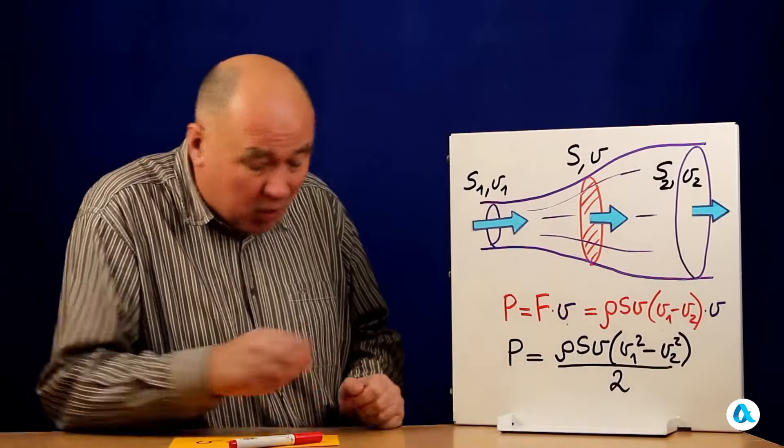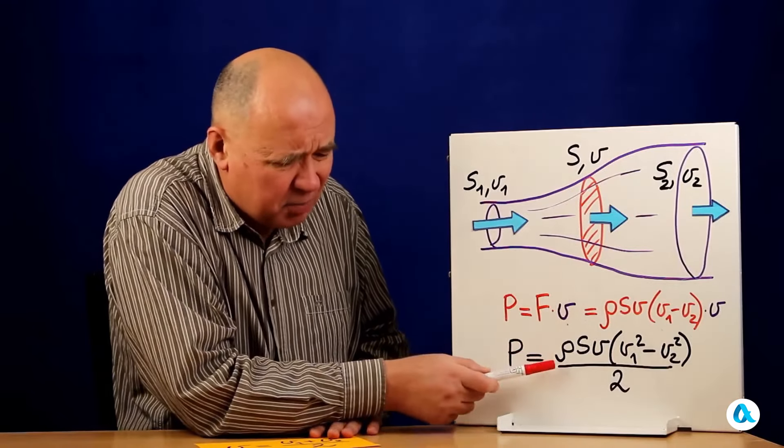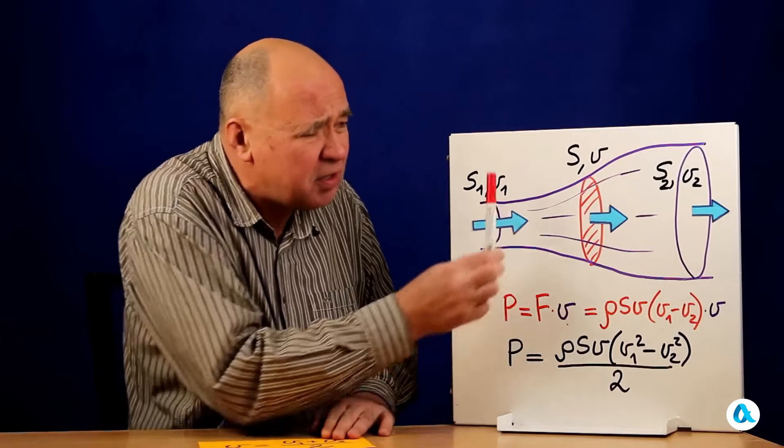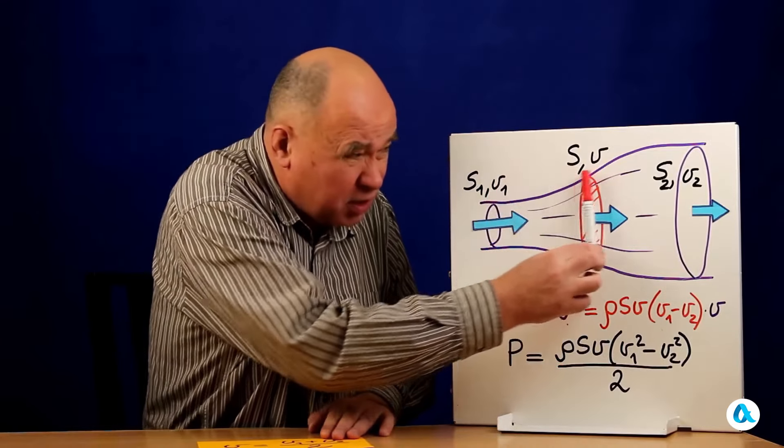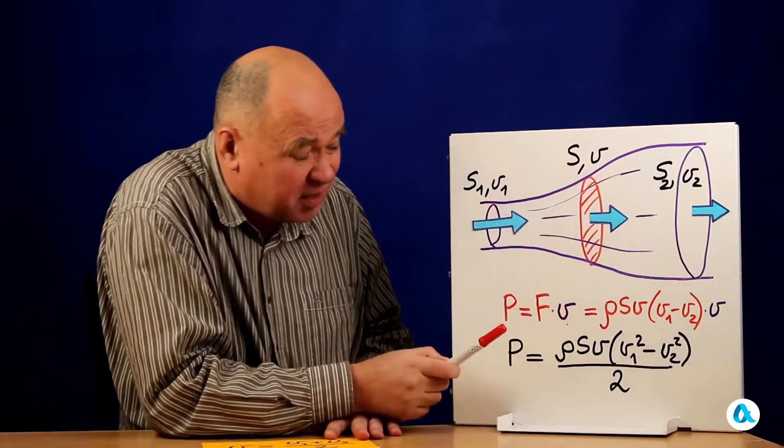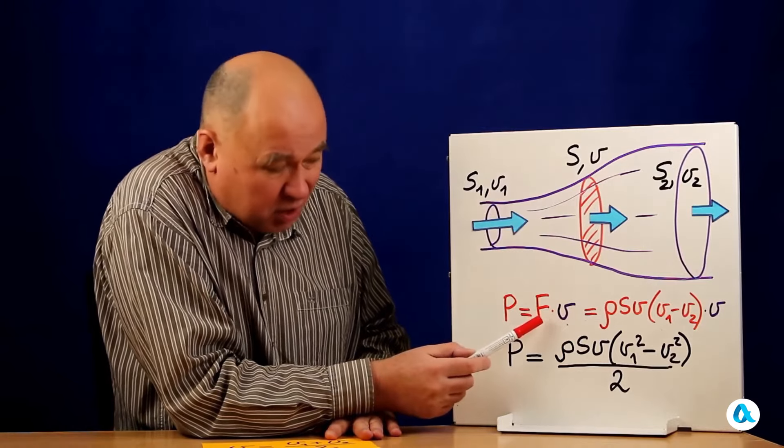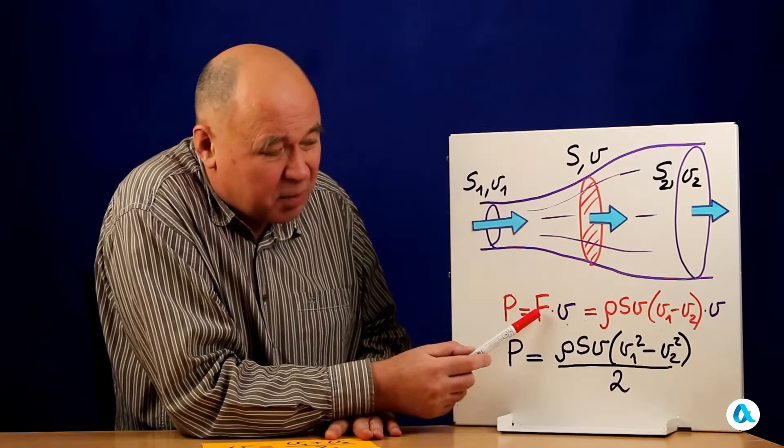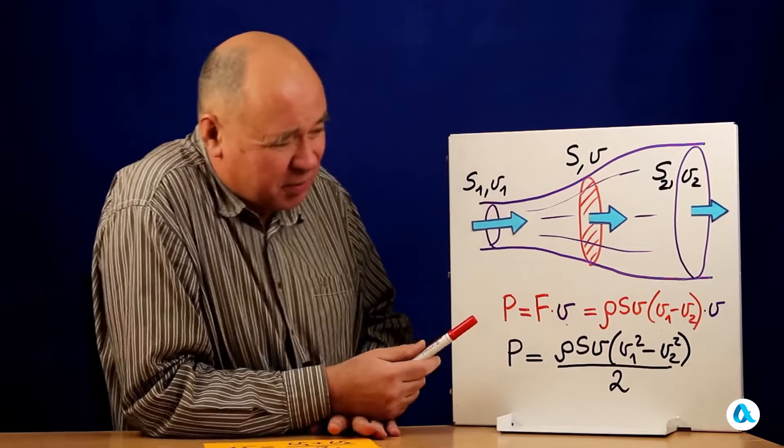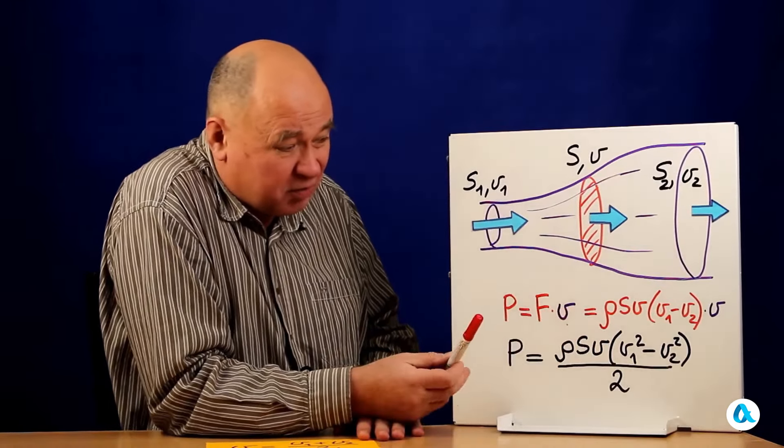Now we will express the power in another way, in a more elaborate fashion. Here we expressed it as the difference in kinetic energies. And now we will express it as the force with which the airflow presses on the disc, multiplied by the speed v at which it does so. The force, according to Newton's second law, is the same mass per unit time ρsv multiplied by the difference in speeds. So we have the momentum before, the momentum after, and the difference in momentum.